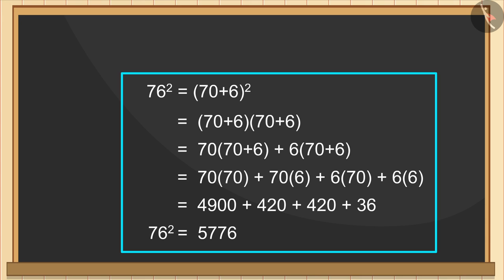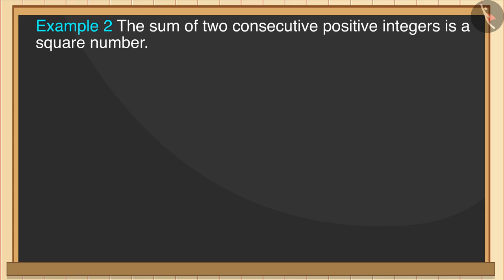Let us now understand the second misconception. Now, think about this sentence: The sum of two consecutive positive integers is a square number. True or false? You can pause the video and think about your answer.